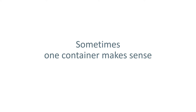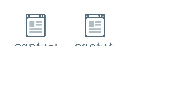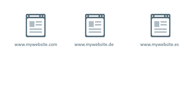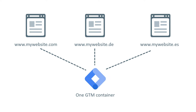However, sometimes having one container on multiple websites also makes sense. Let's say you have one website for the English-speaking market, then the same website for the German-speaking market, and another for the Spanish-speaking market. The design, buttons, checkout flows — everything is the same. The back end uses the same content management system; there are just different supported domains affecting the language. In this case, I'll be tracking the same interactions on all websites and using the same analytics and marketing tools.